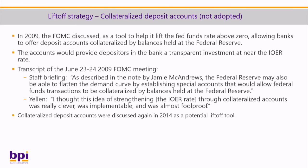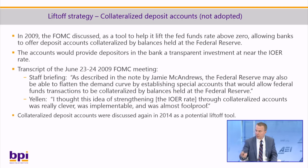Another thing proposed at the time, and Jamie was a big advocate, were collateralized deposit accounts — basically allowing depository institutions to take deposits collateralized 100% by excess reserves at the Fed, giving them transparent savings that allowed them to pass IOER on to their customers. No less an authority than Janet Yellen said: 'I thought this idea of strengthening the IOER rate through collateralized accounts was really clever, was implementable, and was almost foolproof.' These collateralized accounts were discussed again in 2014 as a potential liftoff tool but weren't adopted.